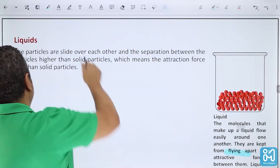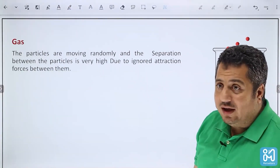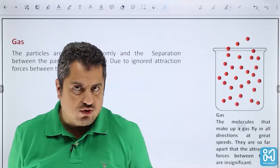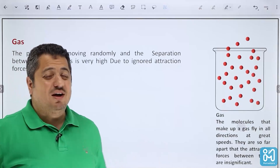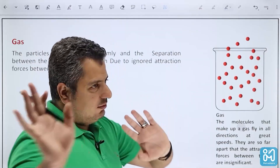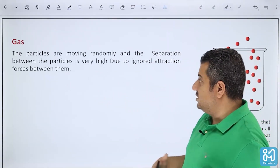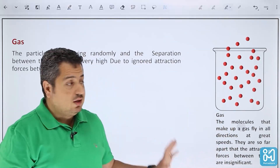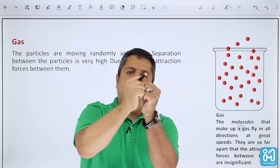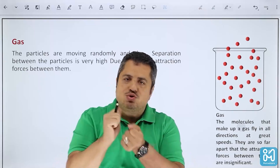For gases, the particles are moving randomly because the separation is very high, which means the attraction force is almost zero. Because the particles are free to move, there is no fixed shape, no fixed separation, no fixed anything — but the mass is fixed. Because the attraction between particles is almost nothing, gas is highly compressible. The particles are far apart, so by compression the separation becomes smaller. In solids and liquids, the separation is already small, so there is no space to compress.